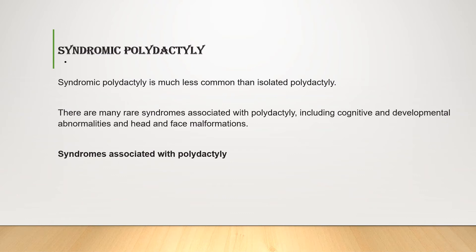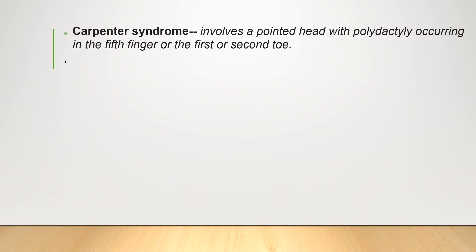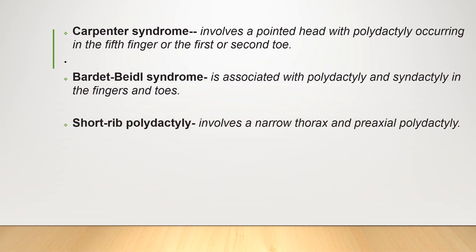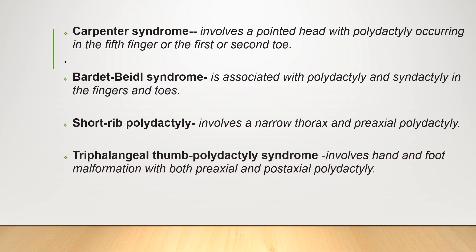Certain syndromes are associated with polydactyly. Down syndrome is strongly associated with double thumbs. Acrocephalosyndactyly involves early fusion of skull bones and syndactyly. Carpenter syndrome involves a pointed head with polydactyly occurring in the fifth finger or the first or second toe — a craniosynostosis with polydactyly. Bardet-Biedl syndrome is associated with polydactyly and syndactyly in the fingers and toes, and may also be associated with renal abnormalities. Short rib polydactyly involves a narrow thorax and preaxial polydactyly. Triphalangeal thumb polydactyly syndrome involves hand and foot malformation with both preaxial and postaxial polydactyly.